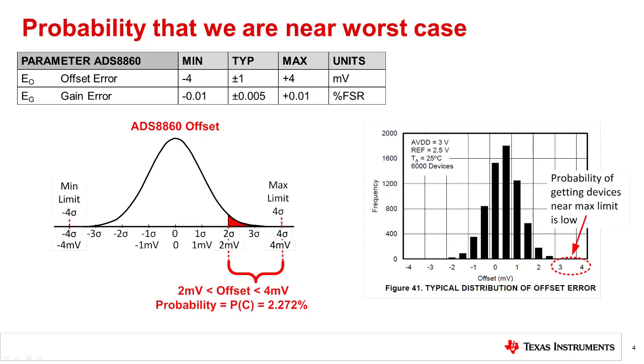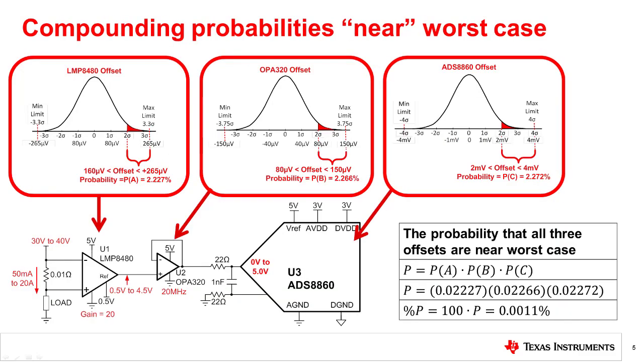We will use the statistical information in the next slide to find the compounded probability that all three offsets from our example circuit are near the worst case value. Here we show the Gaussian distribution for all three components based on the datasheet specifications. What is the probability that all three devices are near the worst case?